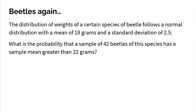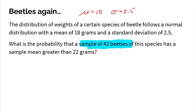Let's take a look at a problem about beetles. The distribution of weights of a certain species of beetle follows a normal distribution with a mean of 18 grams and a standard deviation of 2.5 grams. What is the probability that a sample of 42 beetles has a sample mean greater than 22 grams? The important thing is I'm not looking at a single beetle — I'm looking at a sample of 42 beetles, and there are many possible samples out there.